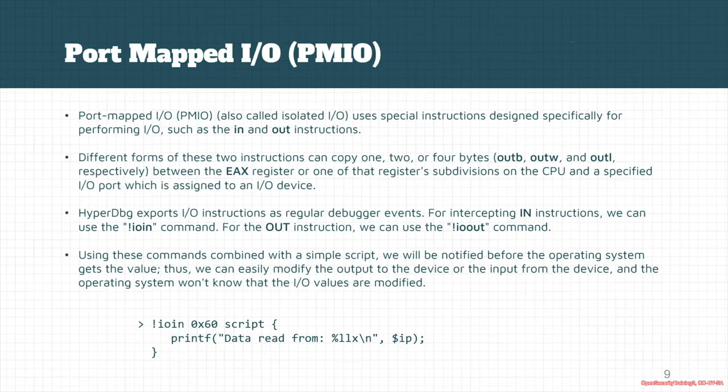We can use the script engine here to be notified about communication between peripherals even before the operating system, and perform changes that the OS will never know occurred. Here is a simple script showing how an IO port is read, using a simple printf in the script engine.